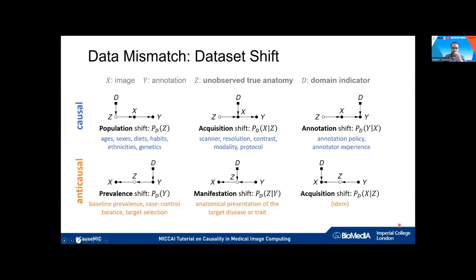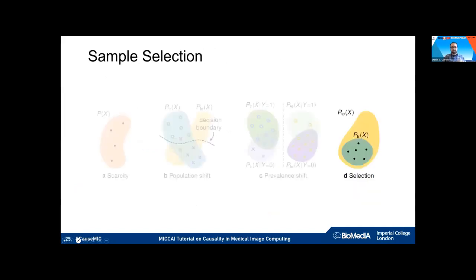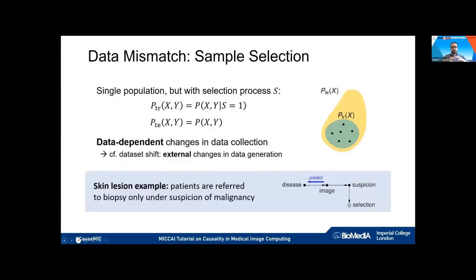Using these diagrams lets us clearly communicate our assumptions about what has changed and what is stable across domains. These are individual cases and can occur in combination. The second process that can produce data mismatch is sample selection: we have a single population but our training data has gone through a preferential selection process such that our sample is biased.